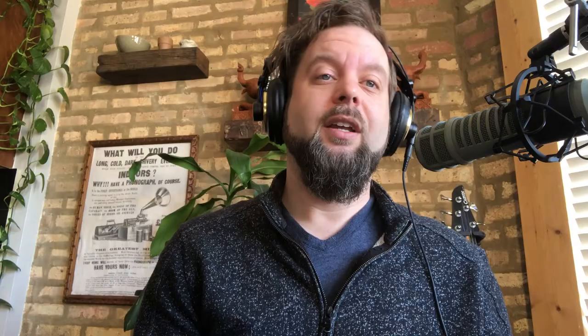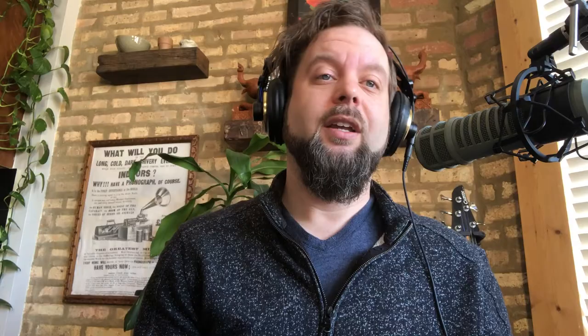Number nine: stick to 12 subdivisions per measure — for example, 3/4 time. We did stick to this one, and I think the rhythmic motif of four against three is one of the things that holds our rendition of Emergent C together from beginning to end.